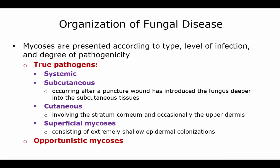Fungal diseases are organized according to type, the level of infection, and the degree of pathogenicity. True pathogens are systemic; they can also be subcutaneous, where a puncture wound introduces the fungus deeper into the subcutaneous tissues. They can be cutaneous, involving only the stratum corneum and upper epidermis, or they can be superficial mycosis — extremely shallow colonizations in the epidermis. There are also opportunistic mycosis.